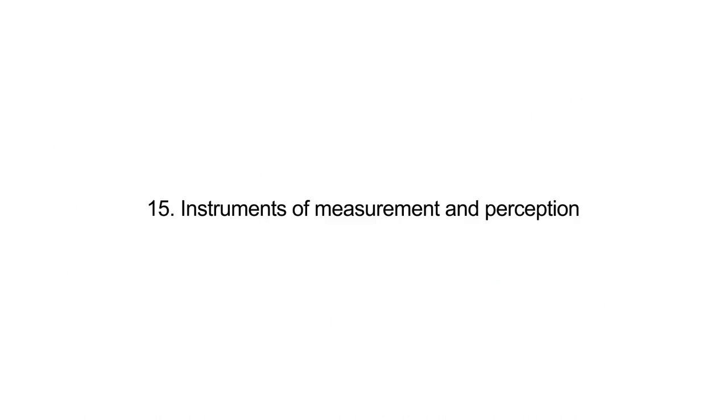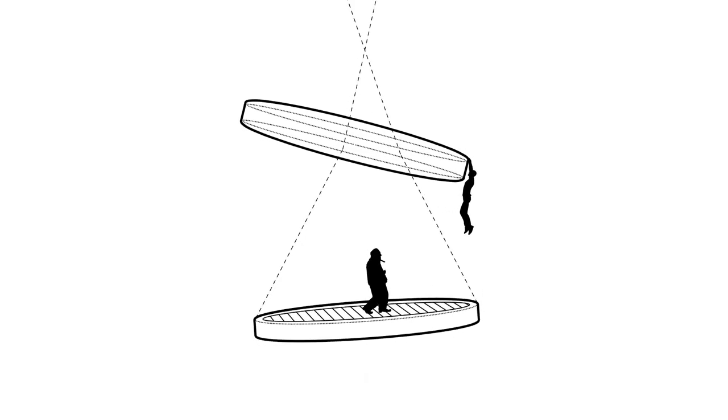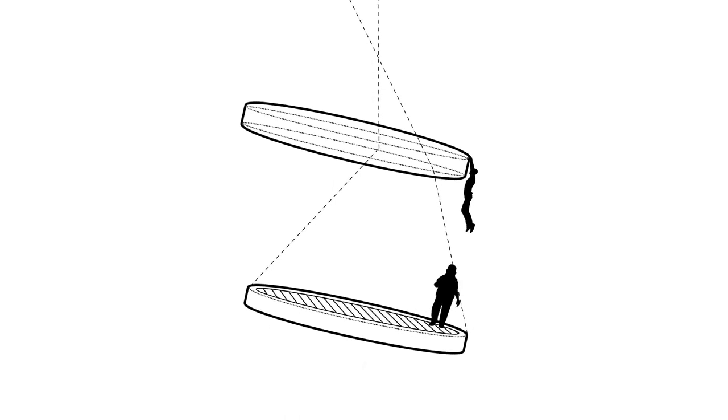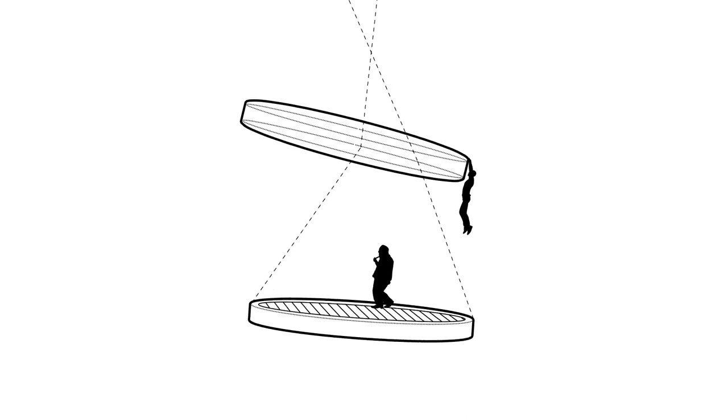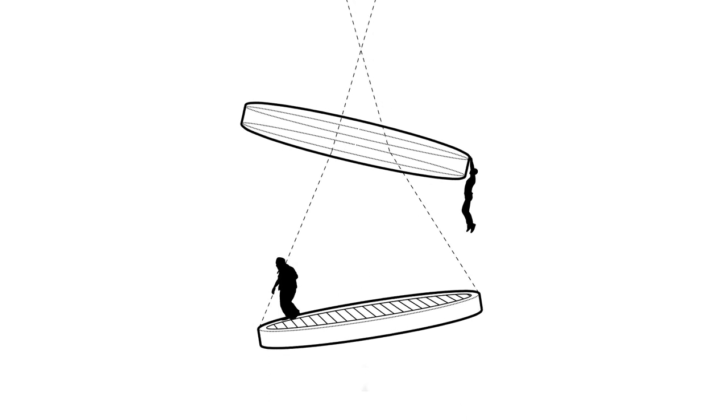Instruments of Measurement and Perception. Those instruments of measurement and perception always come with inbuilt aberrations. The shape of the algorithmic lenses is carefully crafted to project the image that is in accordance with the platform's financial interest and political goals and values.